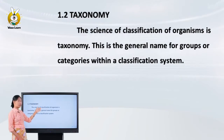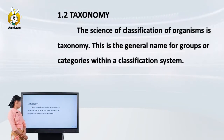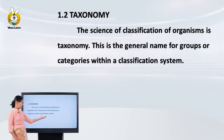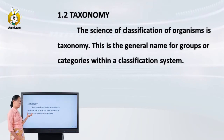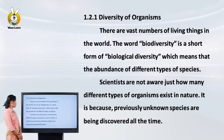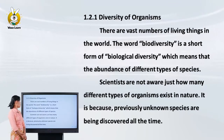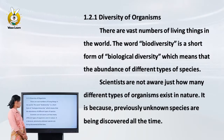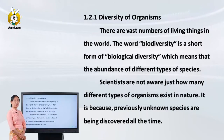This is a general name for groups or categories within a classification system — a general name for the diversity of organisms. There are a vast number of living things in the world. The word biodiversity is a short form of biological diversity, which means the abundance of different types of species.